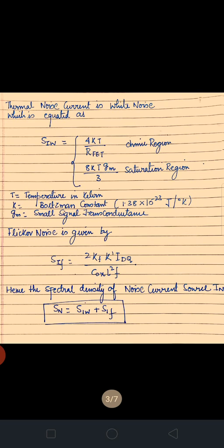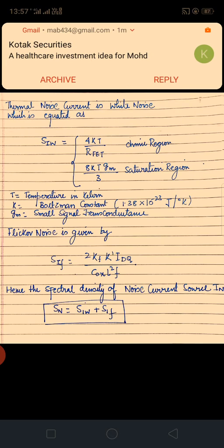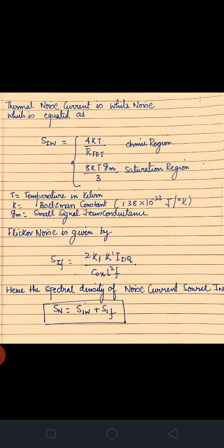The thermal noise current is white noise. In the ohmic region: Si(W) = 4KT / R_FET. In the saturation region: Si(W) = 8KT·Gm / 3, where T is temperature in Kelvin, K is Boltzmann's constant, and Gm is transconductance. The flicker noise is given by Si(F) = 2KF·K'·IDQ / (COX·L²·F). The total spectral density Sn = Si(W) + Si(F), representing the total noise affecting the MOSFET drain current.